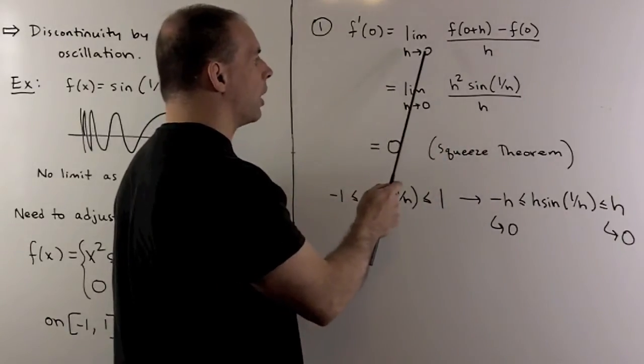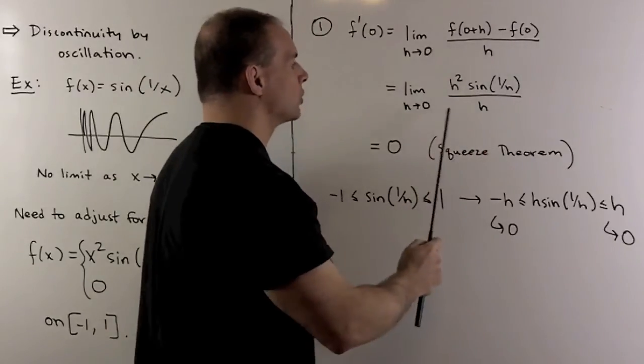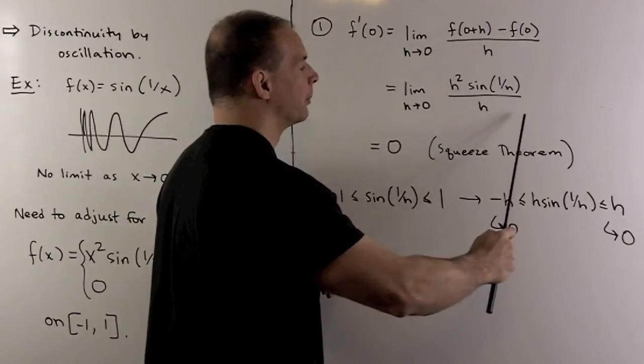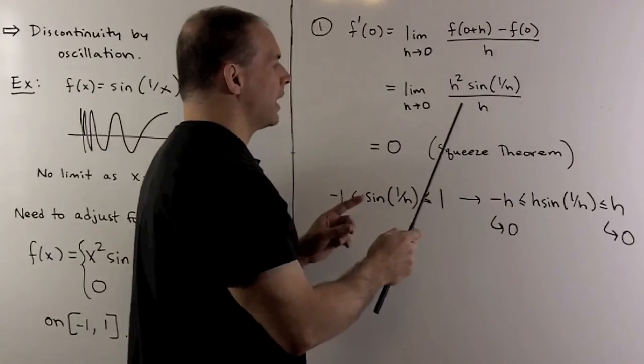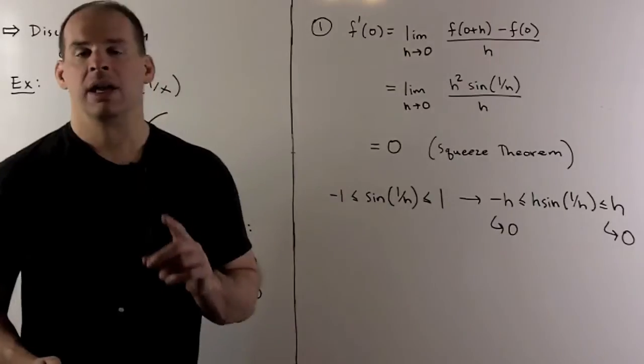We have our quotient. I take the limit as h goes to 0. By definition, we're letting f(0) be equal to 0. So I want the limit of this gadget here. The h's cancel. Then I'm left with h sin(1/h).